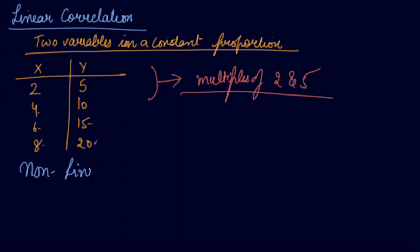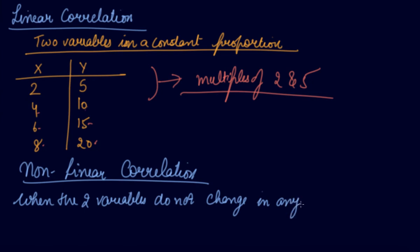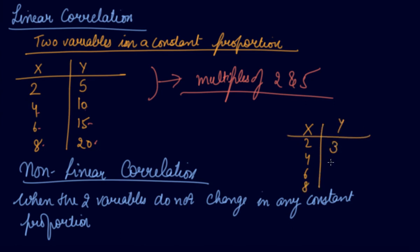Non-linear correlation is when the two variables do not change in any constant proportion. If the relationship is said to be non-linear — let's say x is 2, 4, 6, 8 whereas y is 3, 7, 12, 18. The differences are not according to fixed multiples, so this is a non-linear correlation.